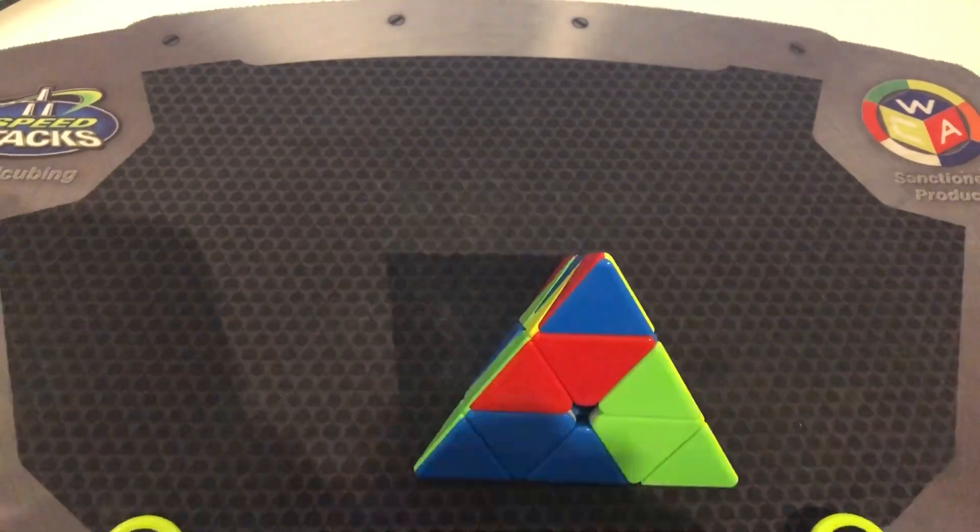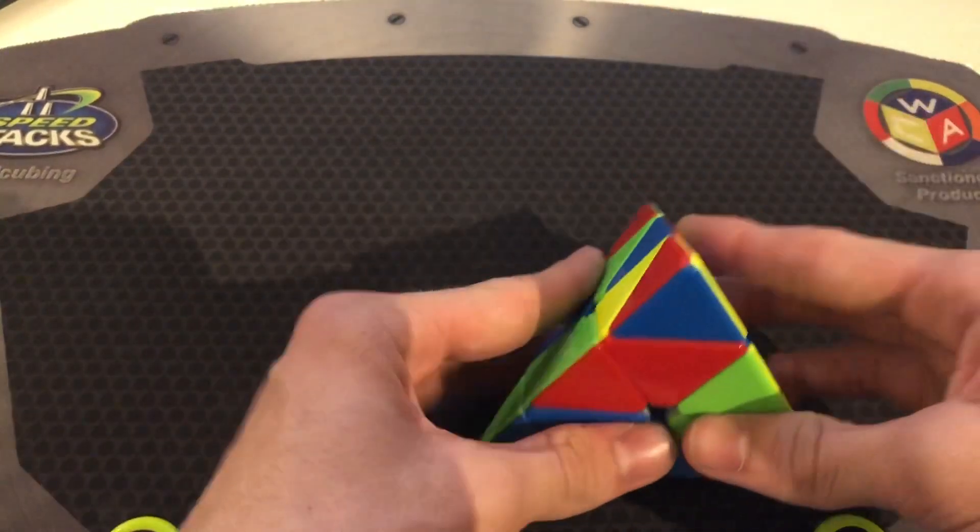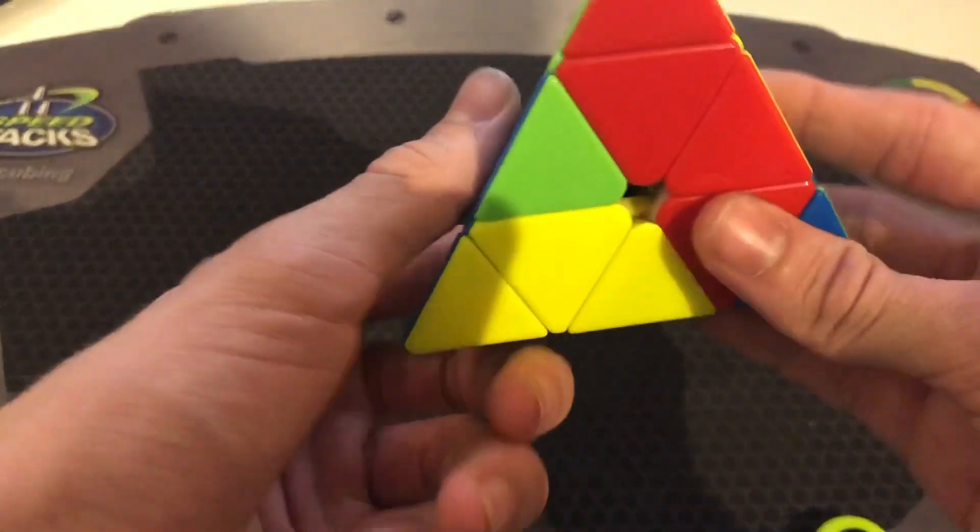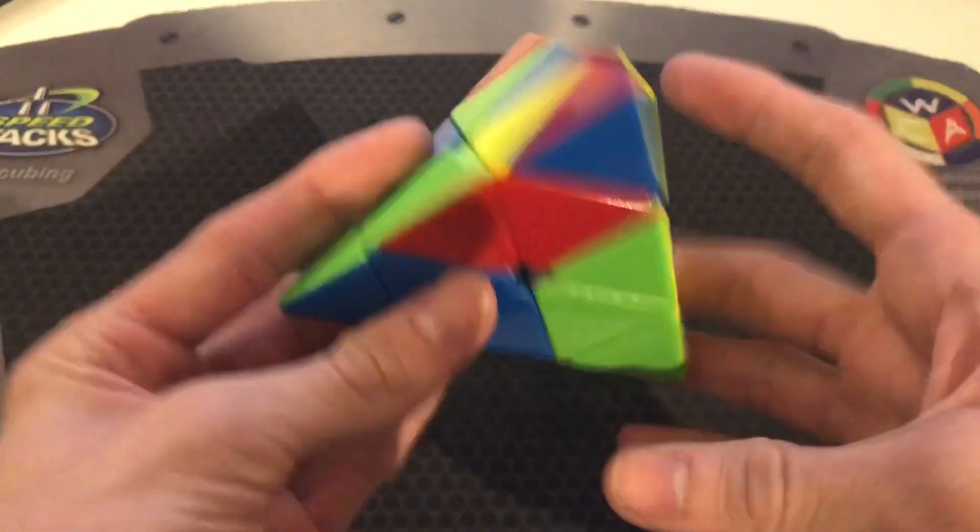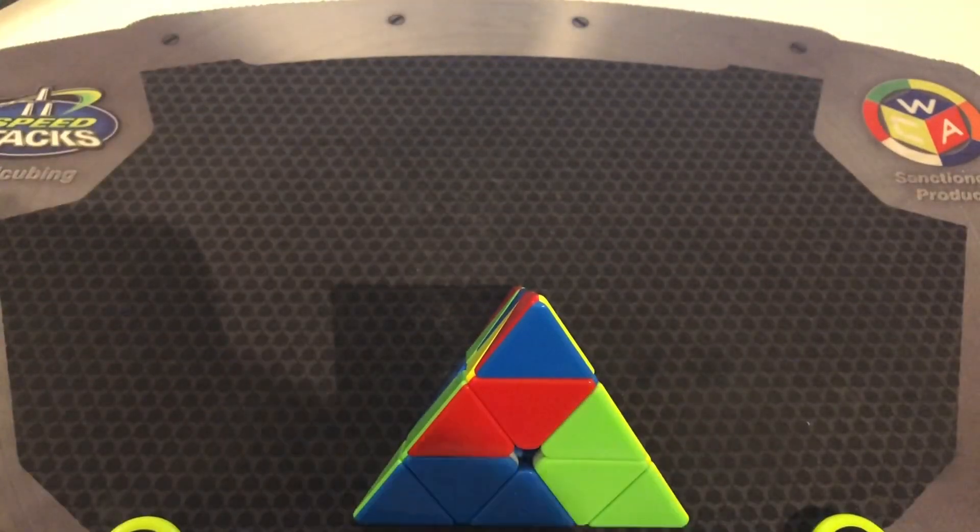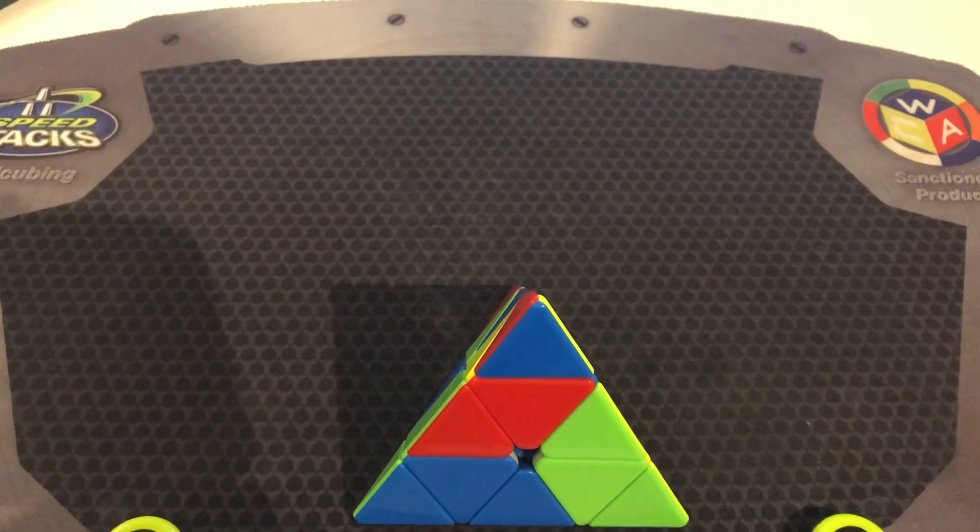Okay, so for the fourth scramble, which is the solve that guaranteed me getting an NR, I did yellow V with this. The time was a 3.86, by the way, so I actually needed a 4.4 to tie. So getting an NR wasn't that hard after the third solve.